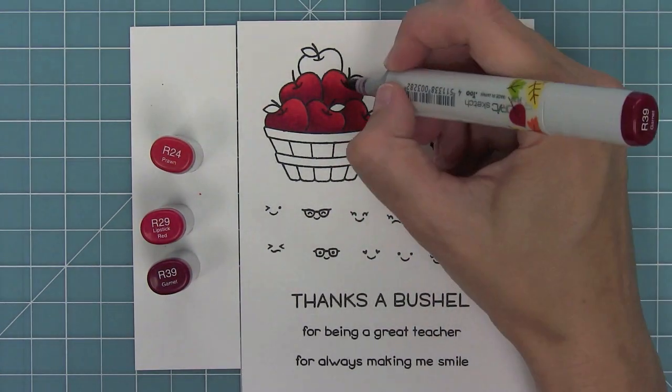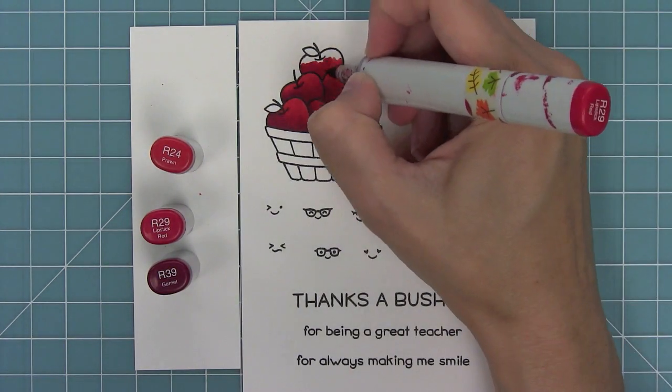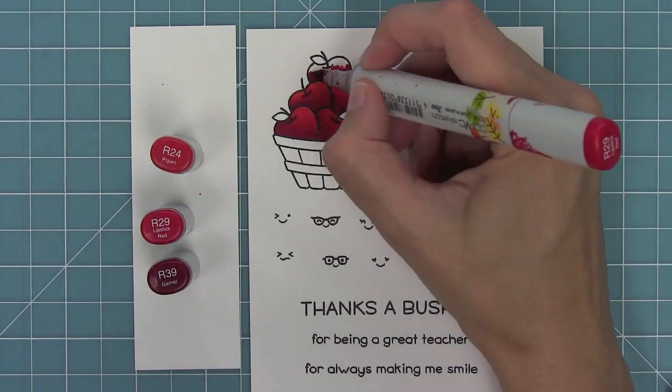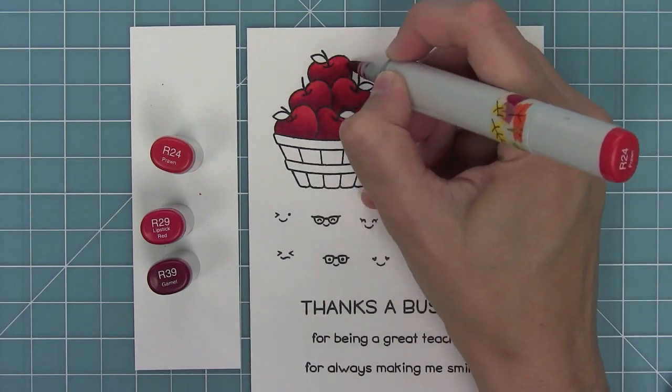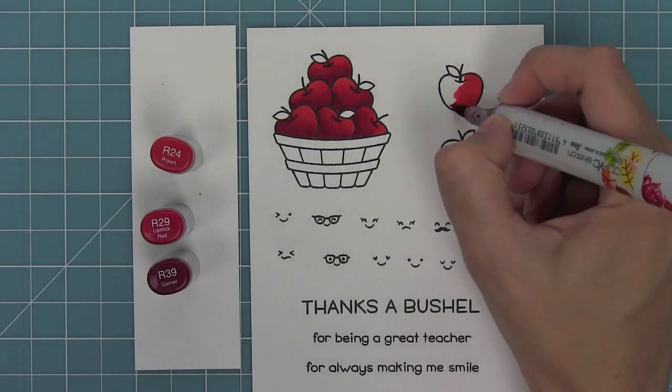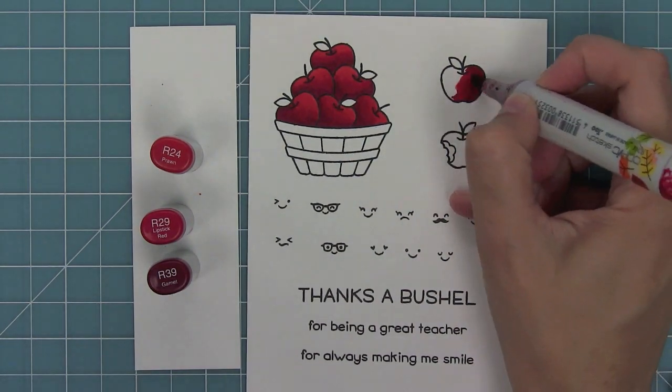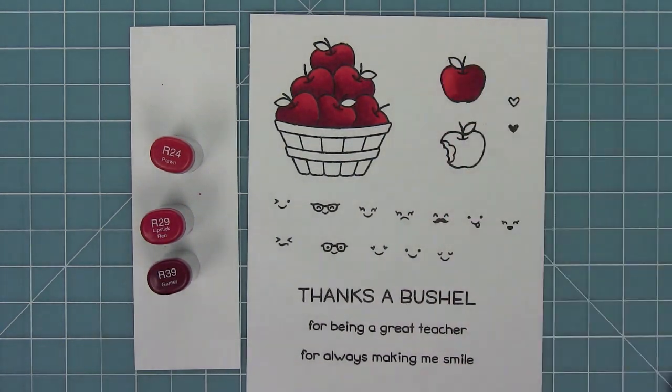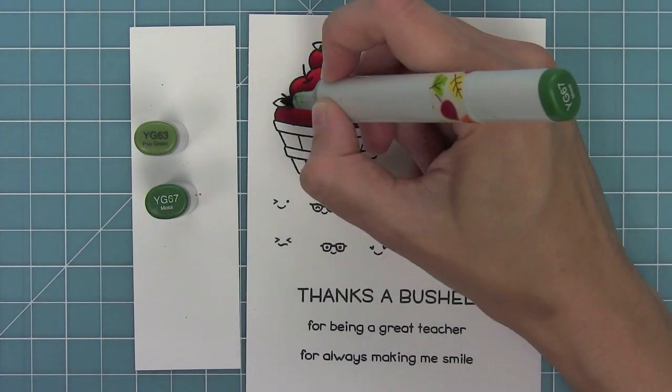So I try to leave one area of the apple as light as possible so that I'm really getting the true color of my lightest marker. I'm only going to add that light marker right at the end, and it really gives it a nice bright finish instead of layering the color too much.